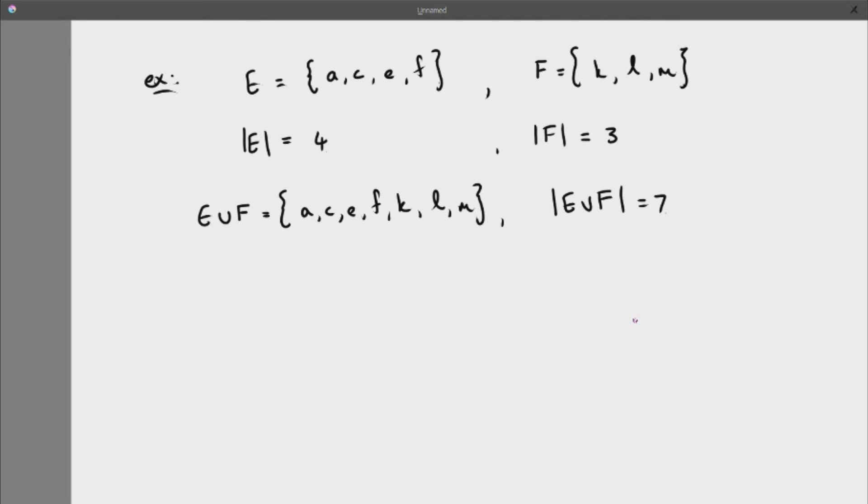But what if I can't see them all? If I make another set, let's call it G, and I make that F, little g, h. Now E union G, it's easy if I can see them all. Throw them all together: A, C, E, F, G, and H, because there's only one F. The number of elements in that union is six.